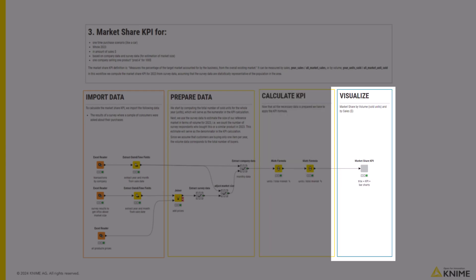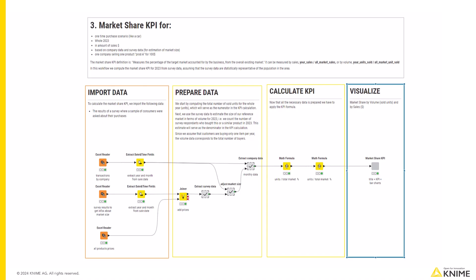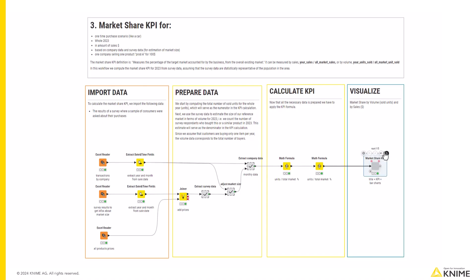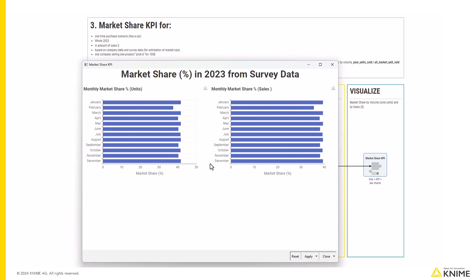Using a data app, we can neatly display these bar charts. You can see the KPI results being broken down by month for volume on the left, and the same KPI results for sales on the right.